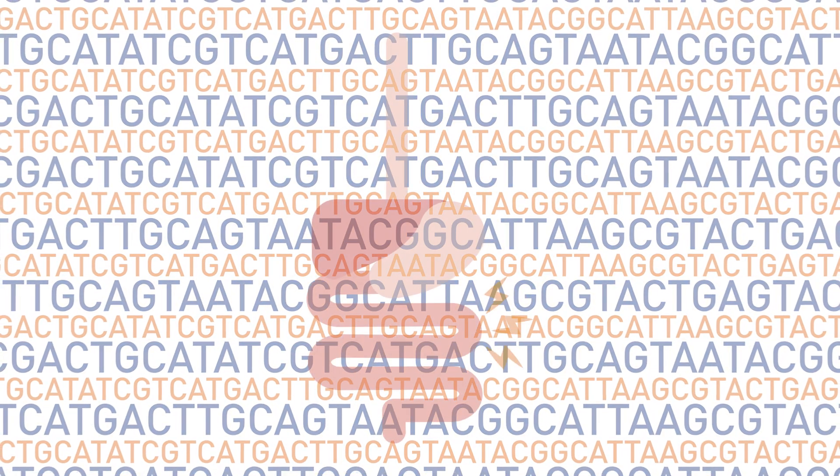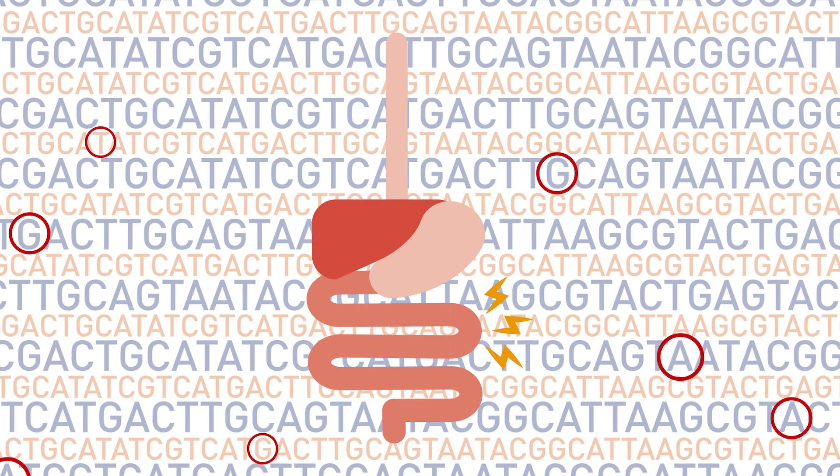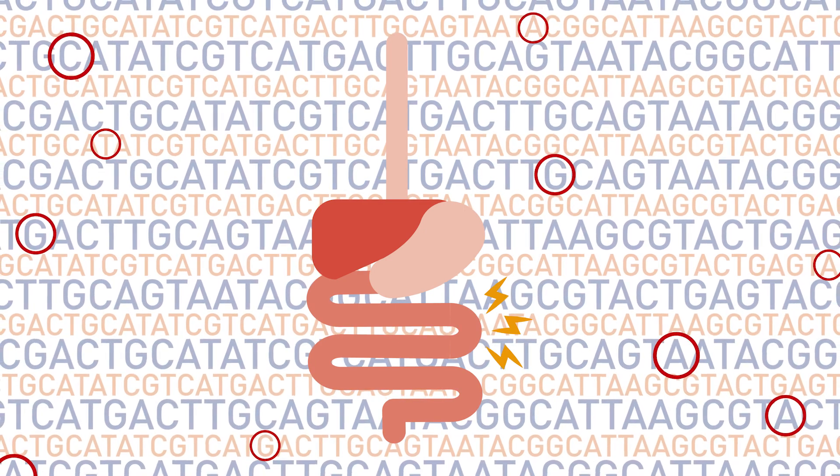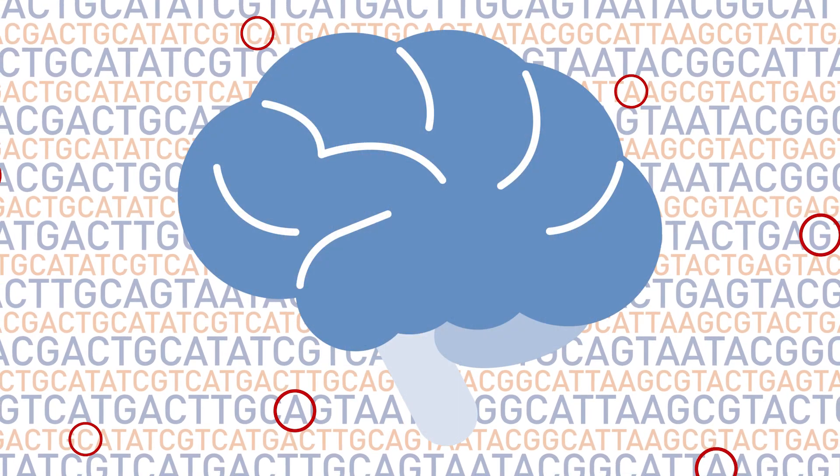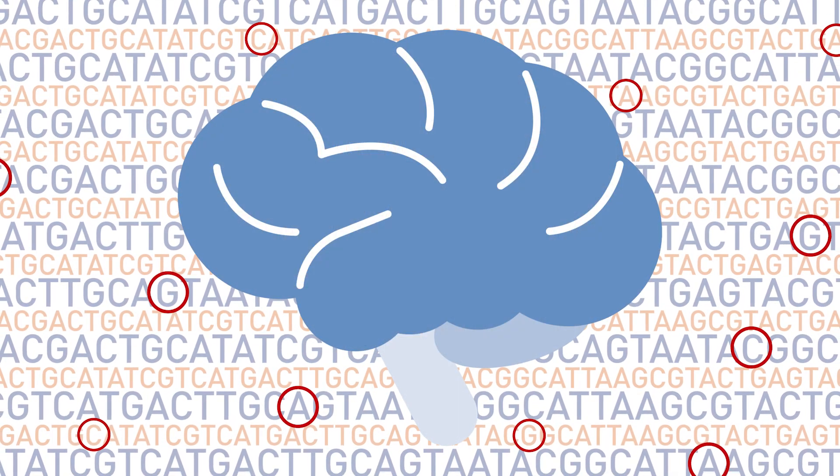For example, researchers have already discovered more than 250 variants that affect risk for inflammatory bowel disease, and more than 200 variants that affect risk for schizophrenia. And by carefully dissecting these variants, we hope to uncover the biological mechanisms that cause these diseases and point the way to potential treatments.